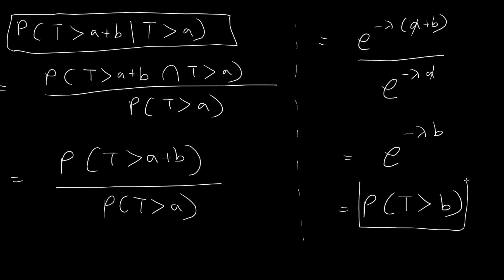The exponential distribution is memoryless. What this means, once again, is that if we have already waited a seconds, the probability that we need to wait for b more seconds is just the same as starting fresh and waiting for more than b seconds. Our past experience does not affect the future probability, which is why this distribution is called memoryless.